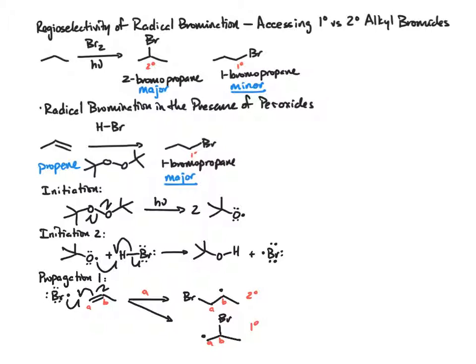We're able to determine how this bromine radical adds to the alkene based on the formation of the most stable carbon radical, and that's going to be secondary. So again, our trend for radical stability is tertiary is greater than secondary is greater than primary.